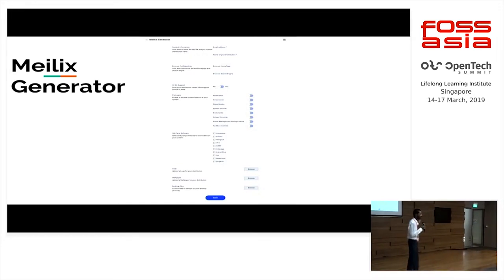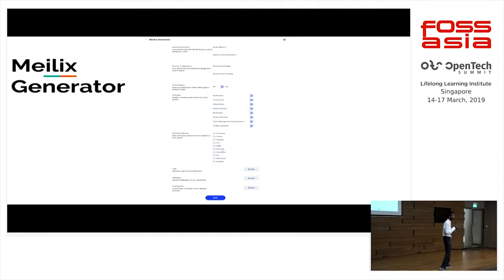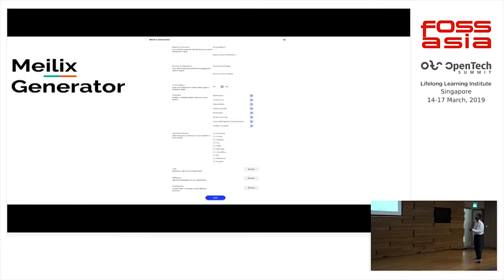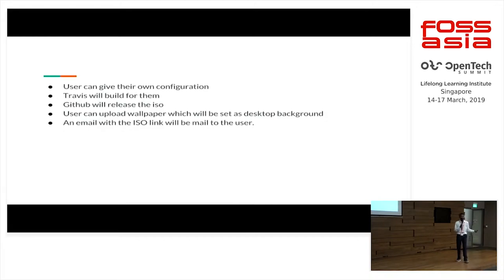We have future plans on how to set up all those computers — we can use Ansible, though this idea is not yet implemented. This is just a perspective to implement in future Malix. We can use Ansible and SSH to run it on all computers. Here are various snapshots: Malix Generator looked like this just one year ago, around six months ago, and currently it looks like this.